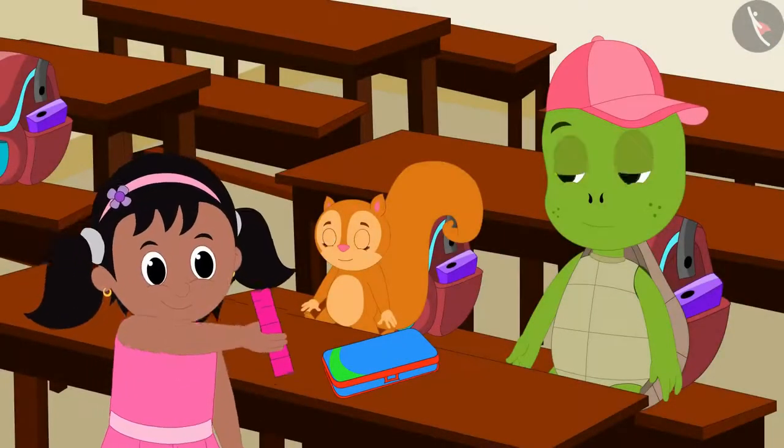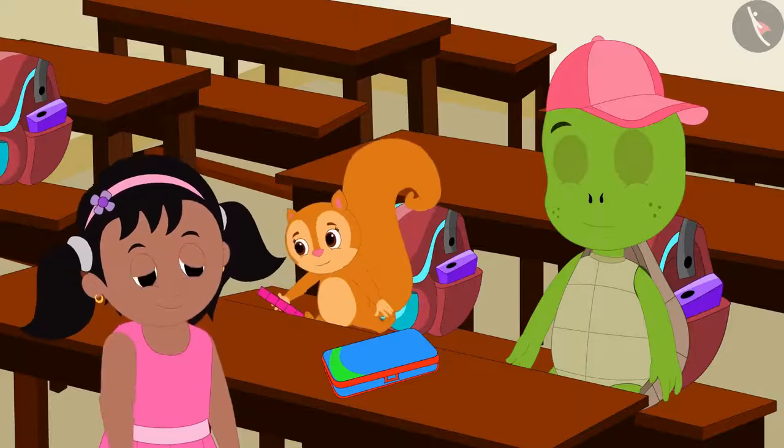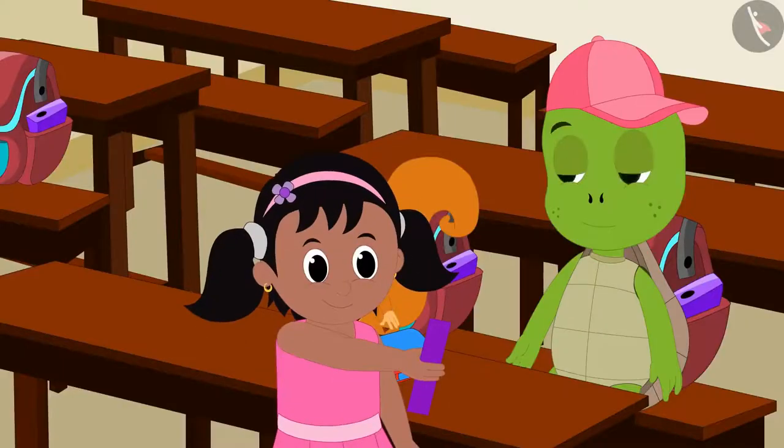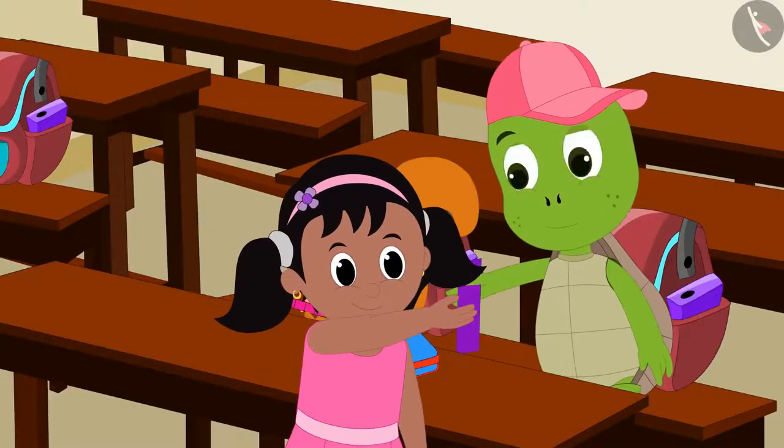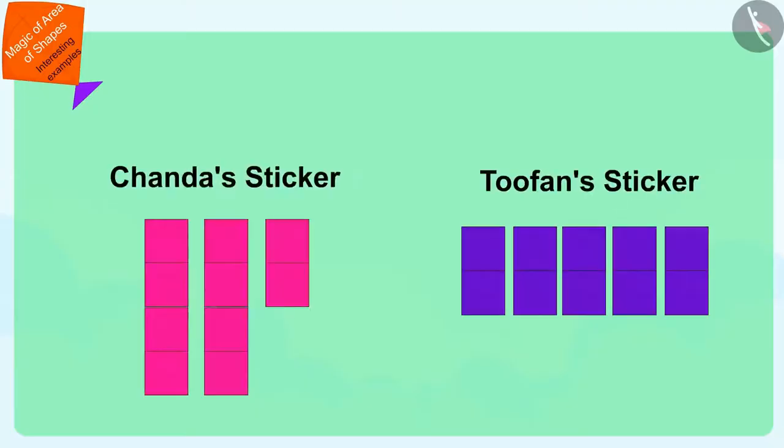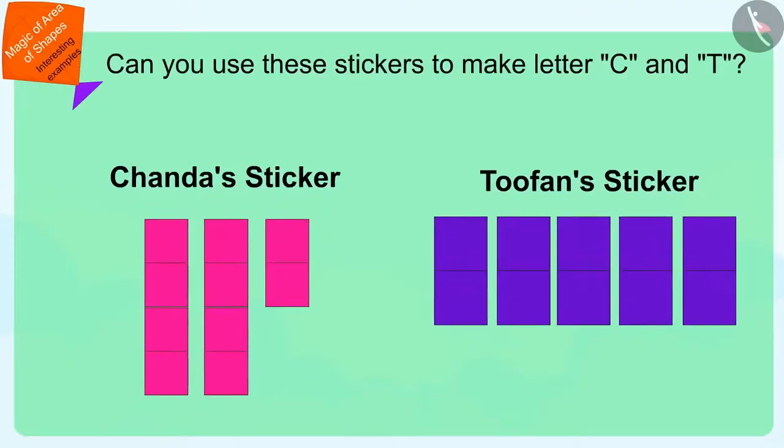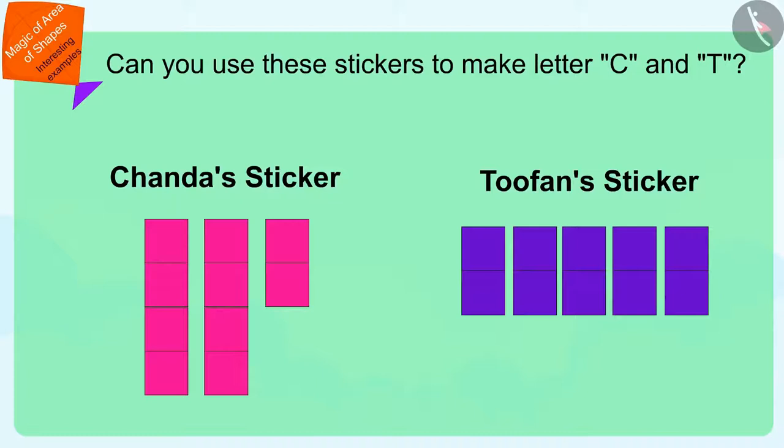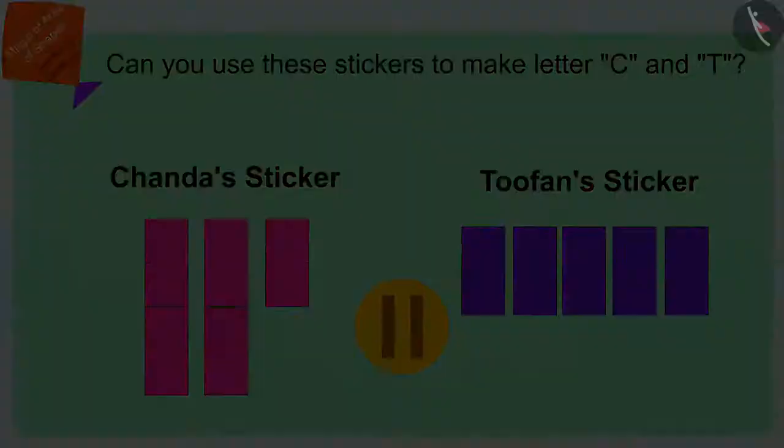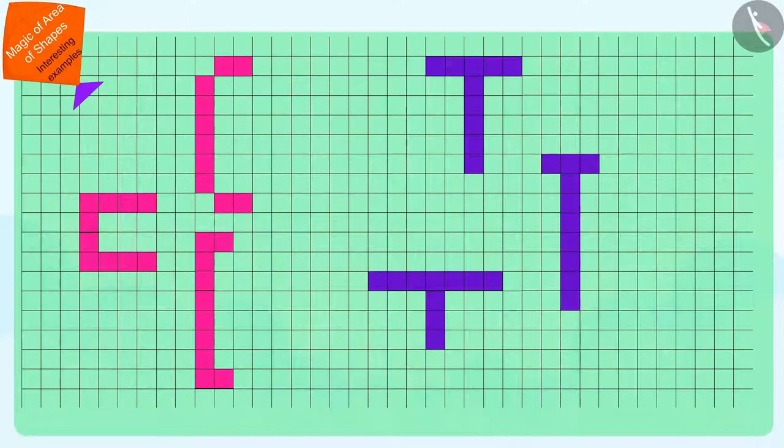Pinky gave 10 stickers each to both Chanda and Tufan to make their own letters. Children, can you use these 10 square-shaped stickers to make Chanda's name letter C and the name Tufan T? If you want, you can find a solution by stopping the video. Well done, children!